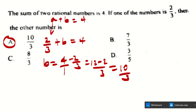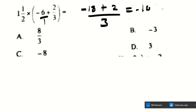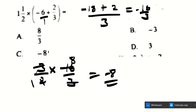The next question involves fraction arithmetic. First handle the bracket: cross multiply to get negative 3 times 2 equals negative 6, plus 1 times 2 equals 2, all over 3 — giving negative 16 over 3. Then convert the mixed fraction to improper: 1 times 2 plus 1 equals 3 over 2. Multiplying 3/2 by negative 16/3 and simplifying, the answer is negative 8, found at C.